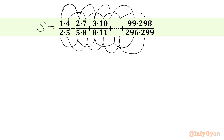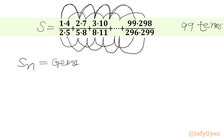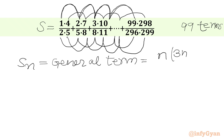If we pick 1, 2, 3, 4 up to 99, we can say there are 99 terms. Now we have to write our general term SN. If we consider the general term is N, then 7 is 3 times 2 plus 1, 10 is 3 times 3 plus 1, and 298 is 3 times 99 plus 1. So we can write 3N plus 1 in the numerator.